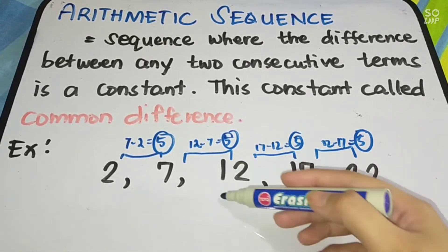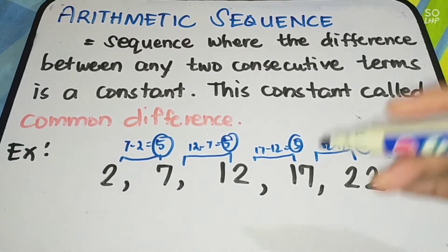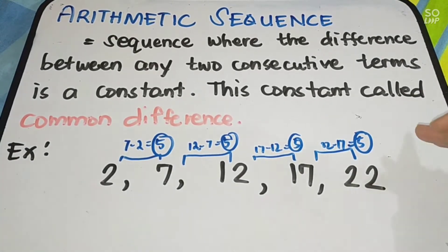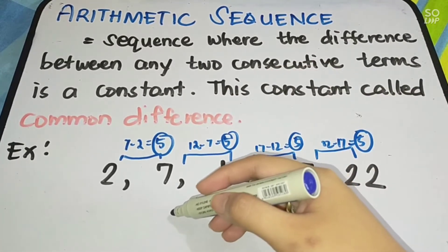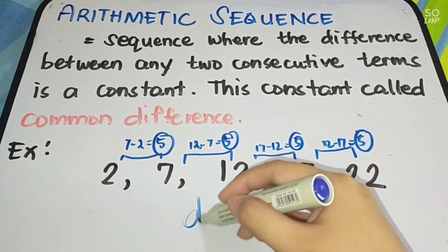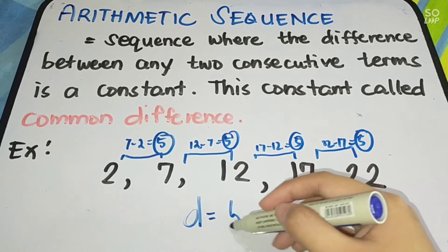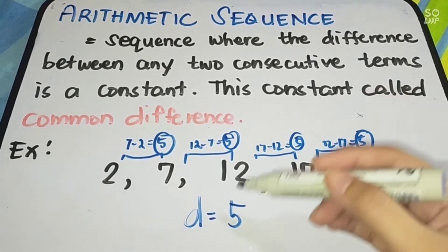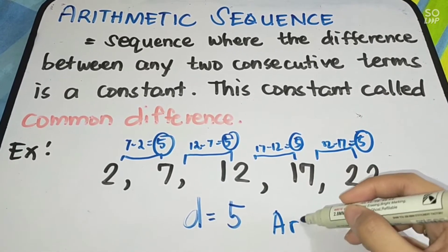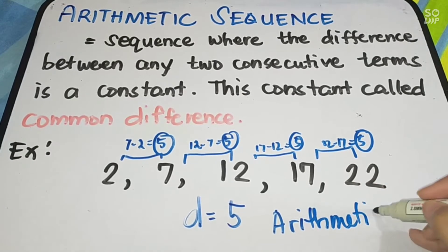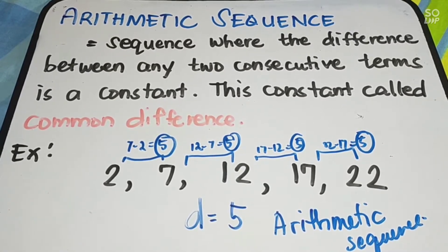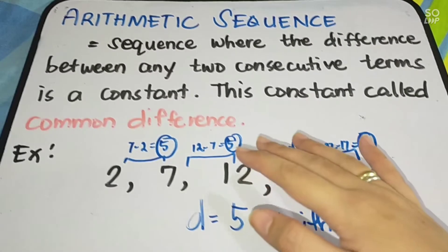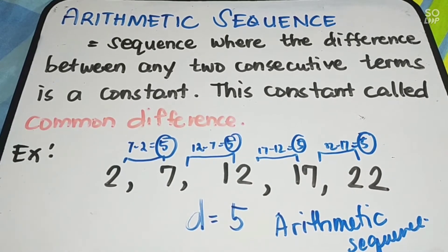Therefore, 2, 7, 12, 17, and 22 is an arithmetic sequence because there is a common difference of 5. The common difference is denoted as small letter D, and it is equal to 5. That is how simple it is to determine if a sequence is arithmetic — if it has a common difference. But if the differences are not equal, therefore it is not an arithmetic sequence.